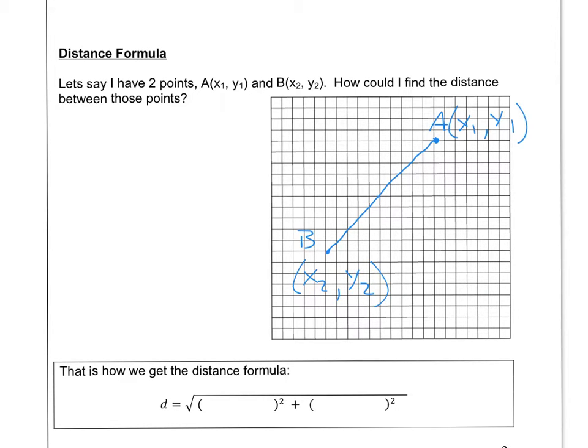Well, we don't really have a way of just finding that distance. However, what we could do is we could try and make this into a right triangle. And we could find this third point. This third point, we actually know what the coordinates would be. Think about it.